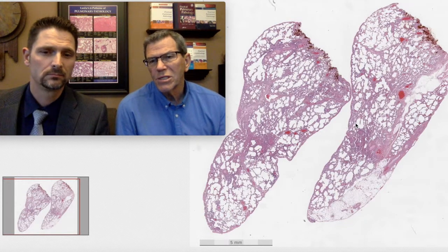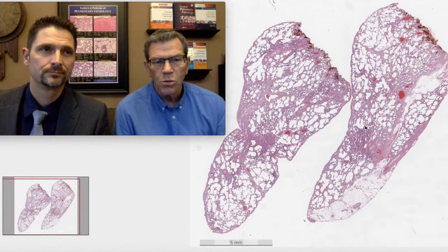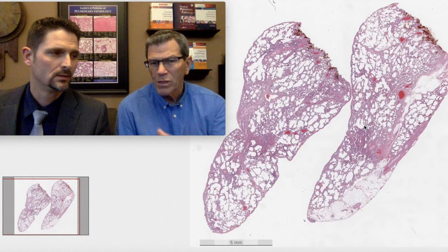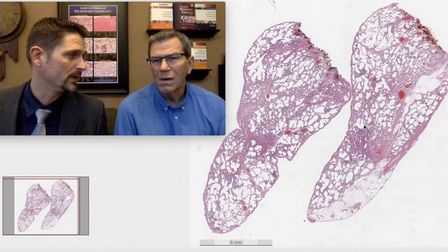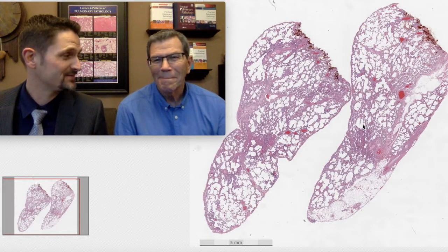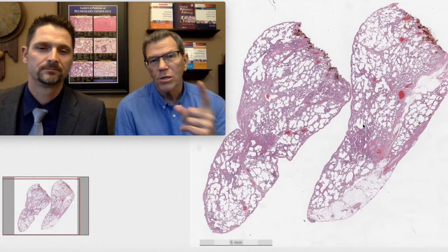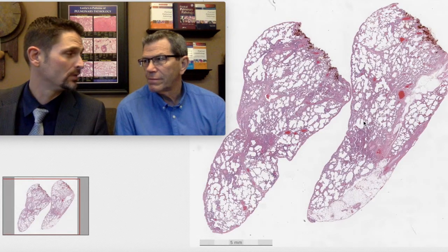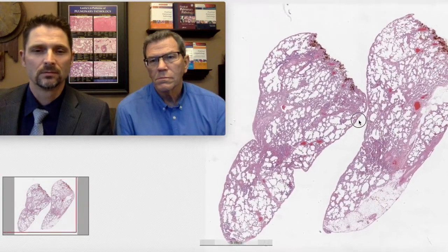A lot of people will say patchy equals UIP. Should we be thinking about UIP when we look at this biopsy at 2X? No — UIP is a pink disease, and we're in the blue disease category. So even though it's patchy, it's not UIP. Too inflammatory for UIP. Too blue.